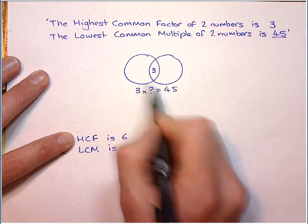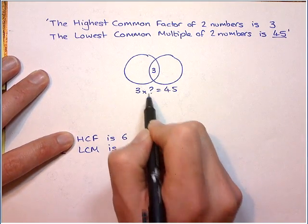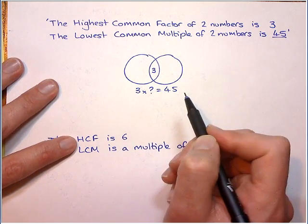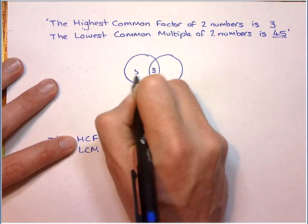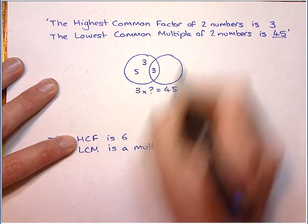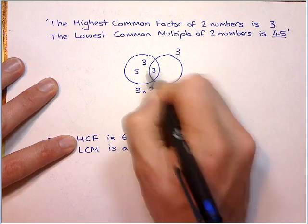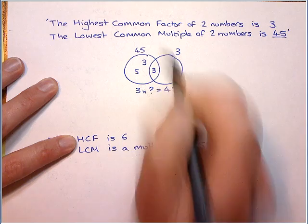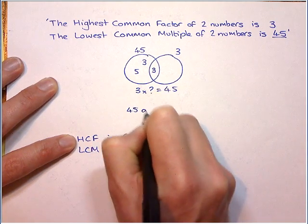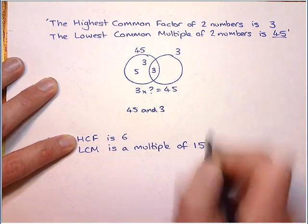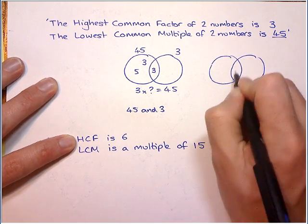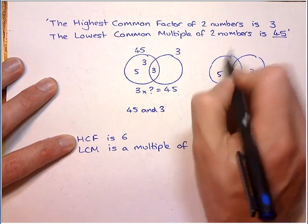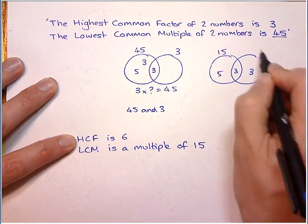So if I take the 3 out, 3 times what is 45? Well, I know that's 15. So I've just got to put two numbers, which, remember, can only be prime numbers that make 15. So it has to be 5 and 3. So if I put the 5 there, let's put the 3 there as well. It means this number here would just be 3, and this number here would be 9 times 5, which is 45. So the two numbers could have been 45 and 3.